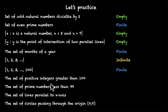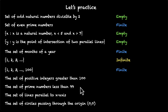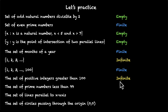The set of positive integers greater than 100. There are way too many positive integers greater than 100 — you can't even count them. You can have 101, 102, 103, 104, and so on with no limit, which means this is infinite. This set is an example of infinite sets.